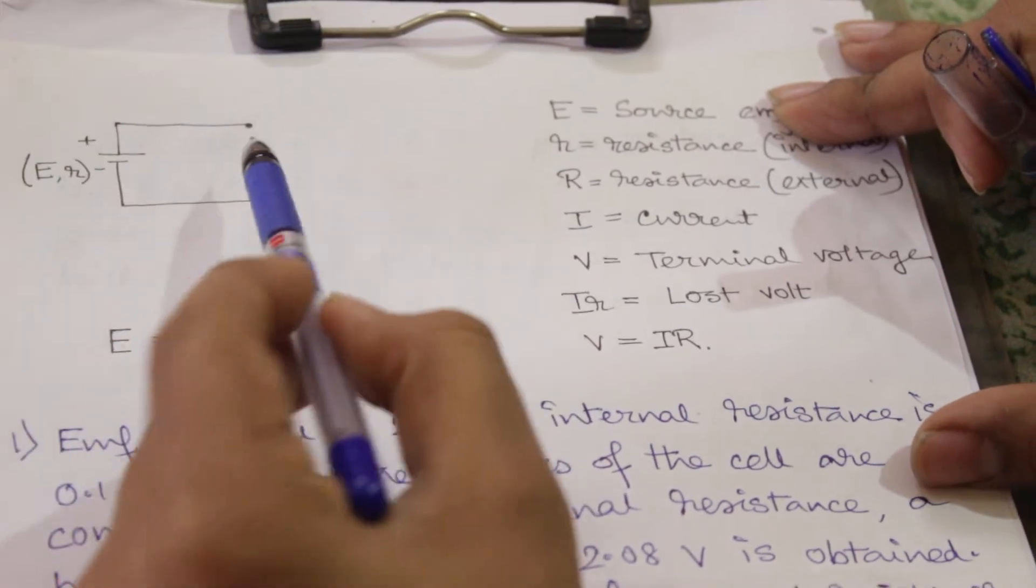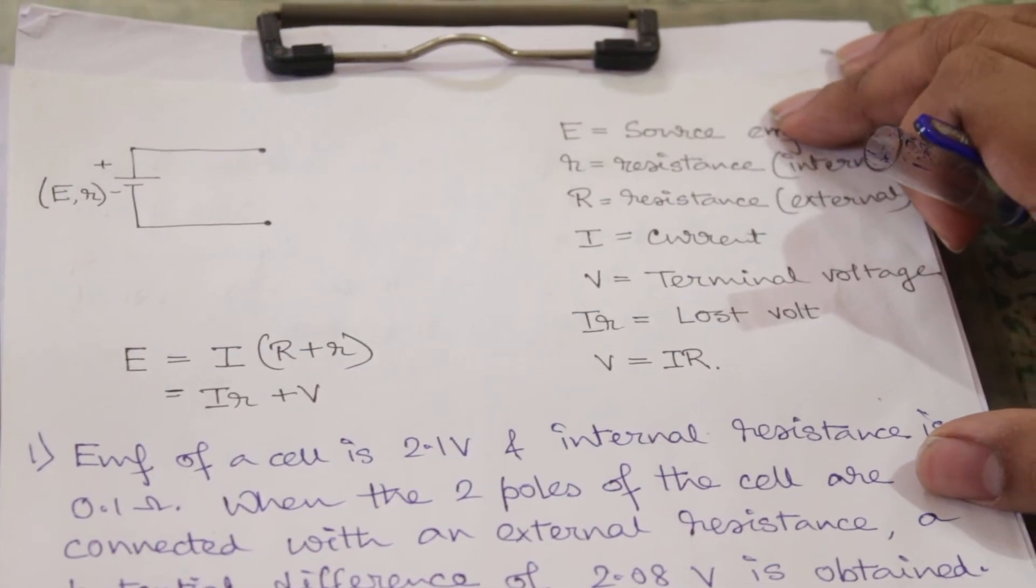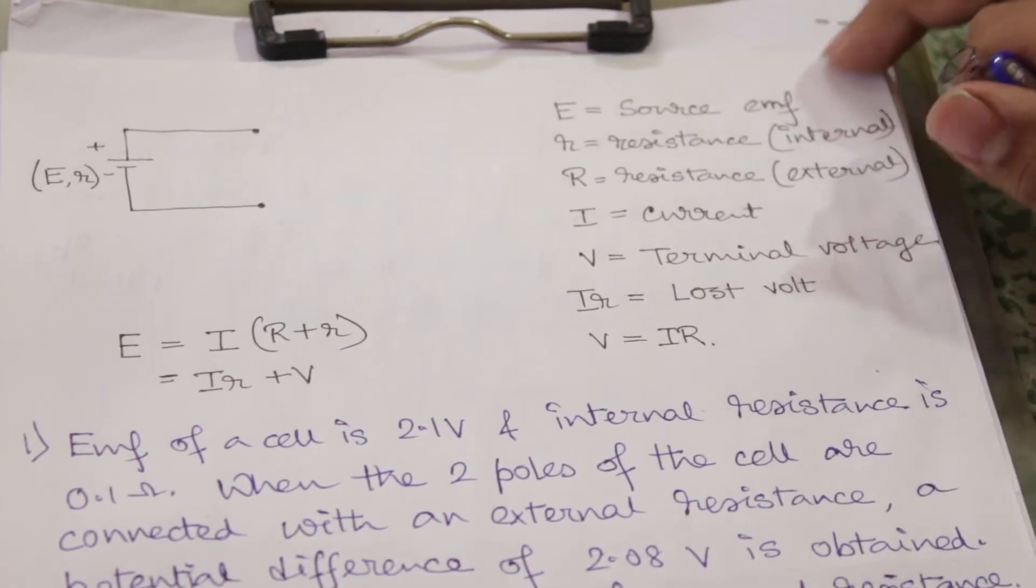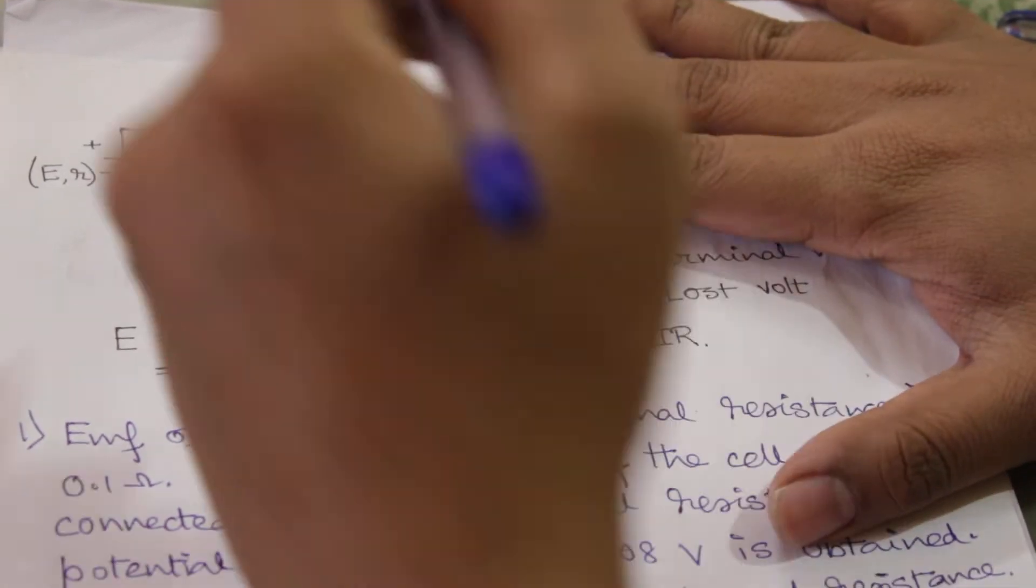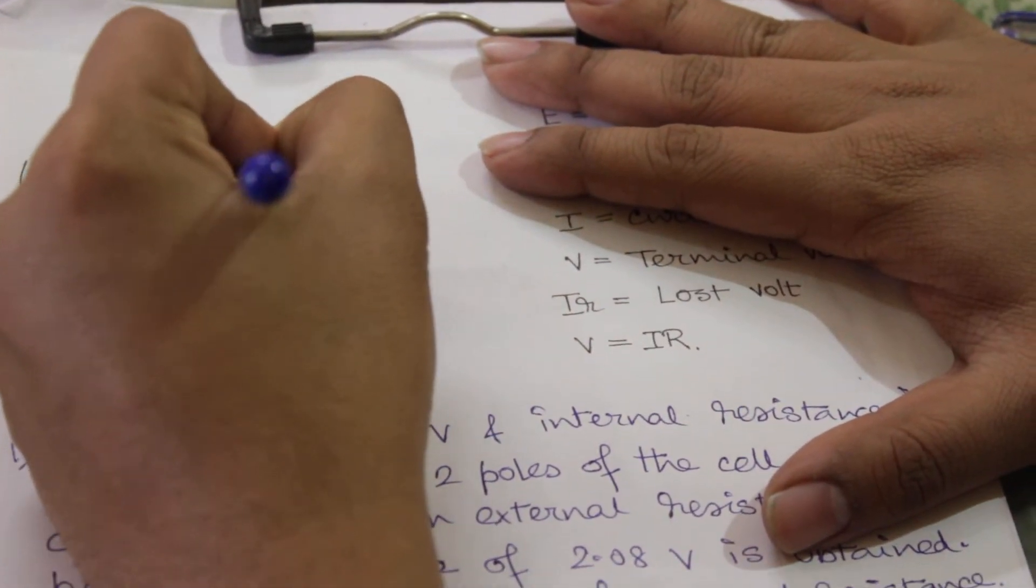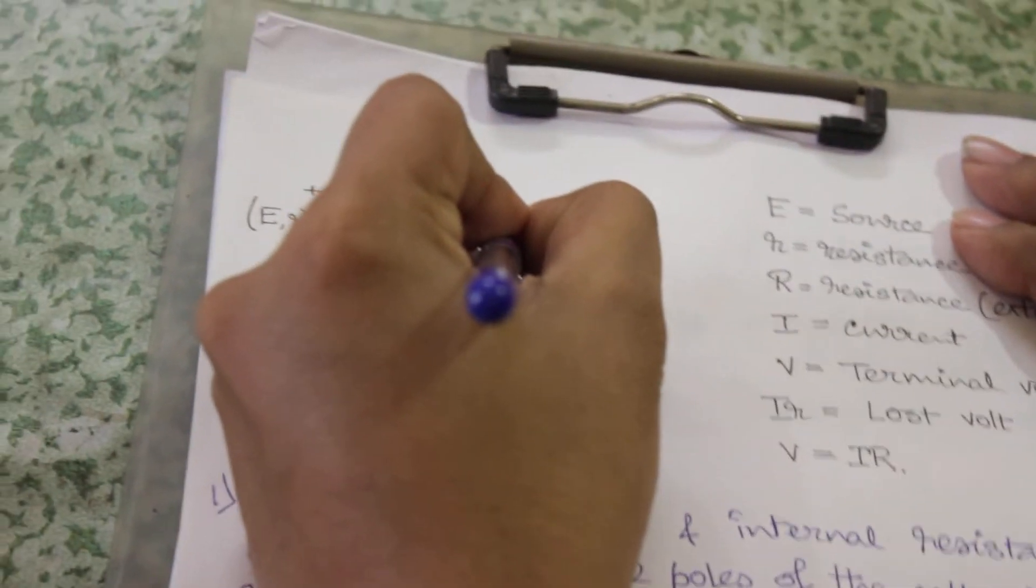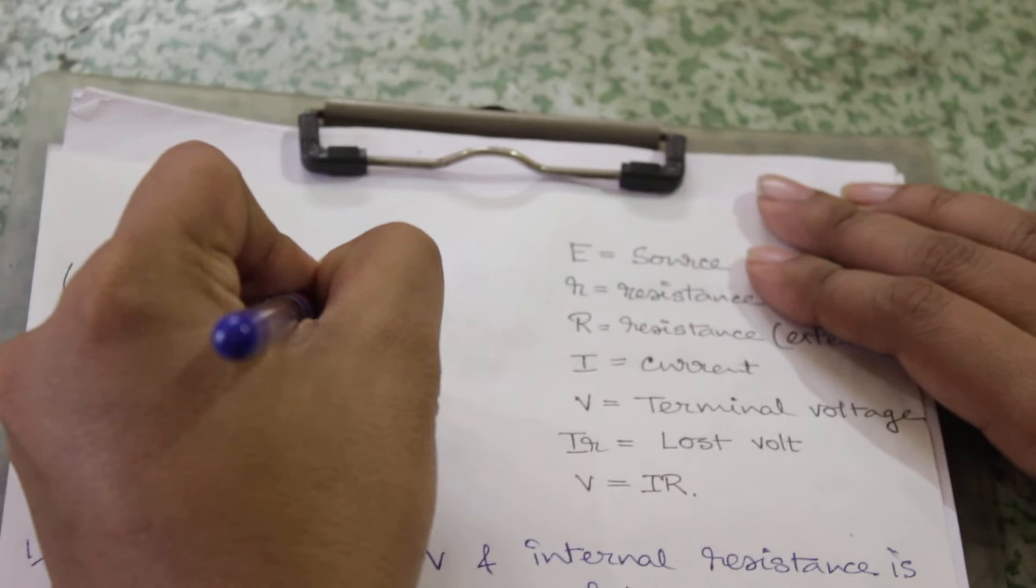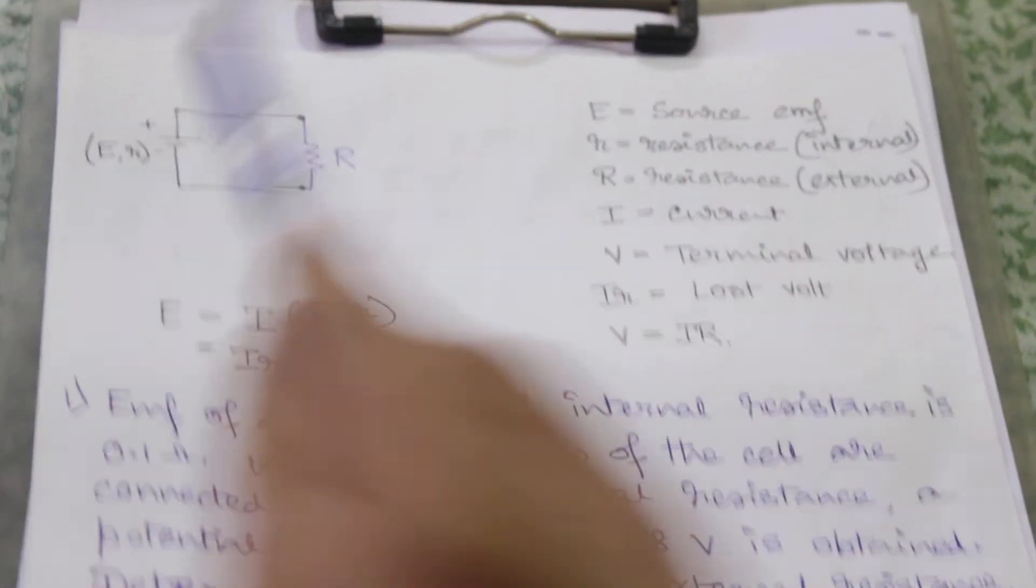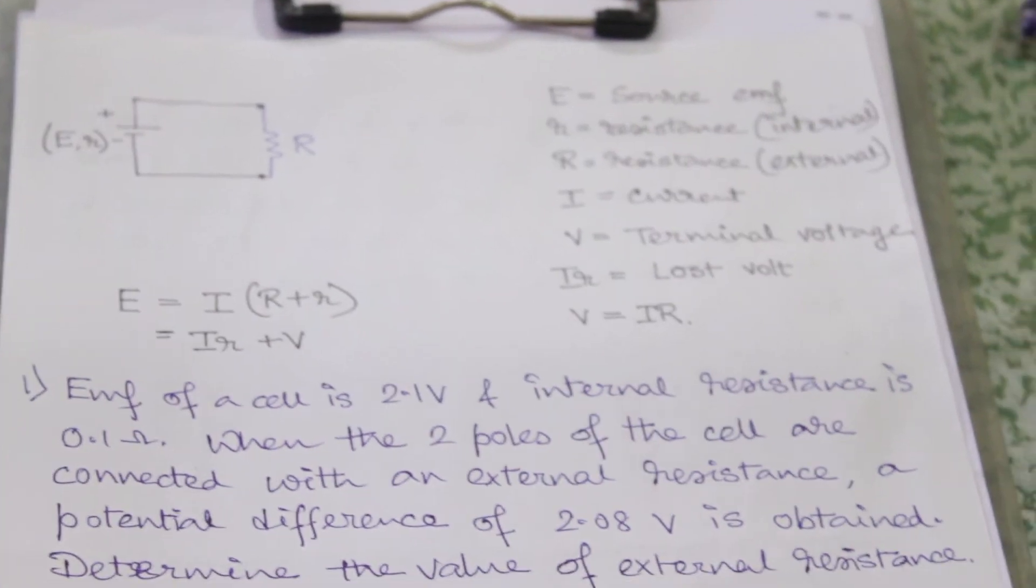Now you can see that its terminals are open. If we add any external resistance at the terminal, so this cell will become like this. Now it is closed, so external resistance is R and internal resistance is smaller r.